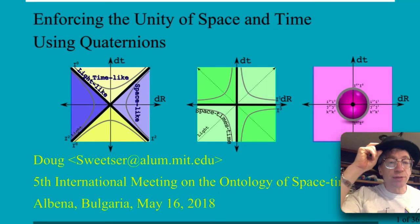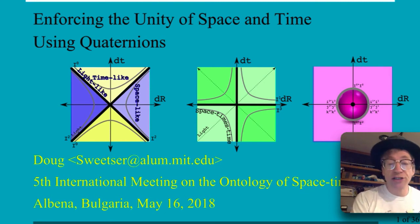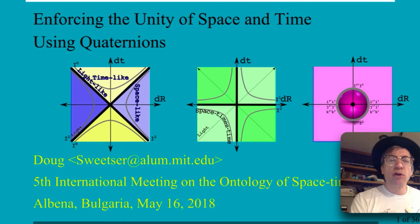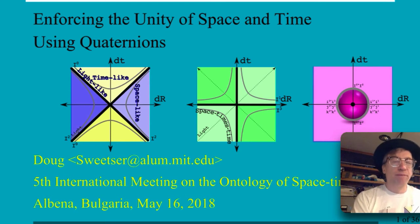Hello, I'm Doug Sweetser, and this talk is entitled Enforcing the Unity of Space and Time Using Quaternions. It was given at the fifth international meeting on the ontology of space time in Albina, Bulgaria, very close to the Black Sea. I traveled all that way because I thought if there were going to be a group of people who thought that time and space had to be forced together at all times and all places, this would probably be the group. It really was a productive time for me.